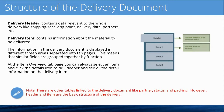On the item overview tab, you can always select an item and click the details icon to drill down deeper and see all the detailed information on the delivery item — I'll show that in the demo. There are also other tables linked to the delivery document besides just the header and item tables, such as partners, statuses of the delivery document, and packaging. The header and item are the basic structure of the delivery.